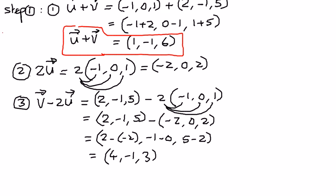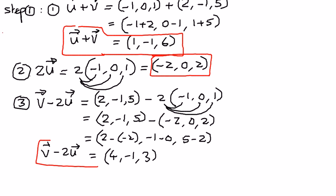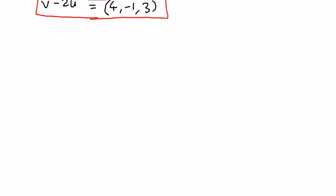So we got all three results. The first is vector u plus vector v, the second is 2 times vector u, and the third is vector v minus 2 times vector u. Now let us go to the graph sheet and see how we can graph these.